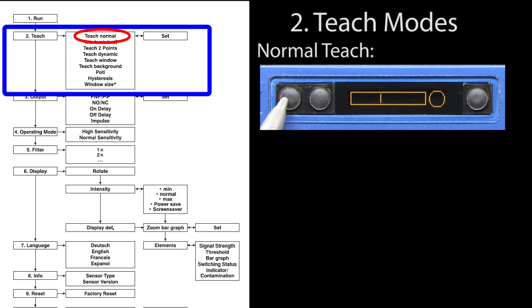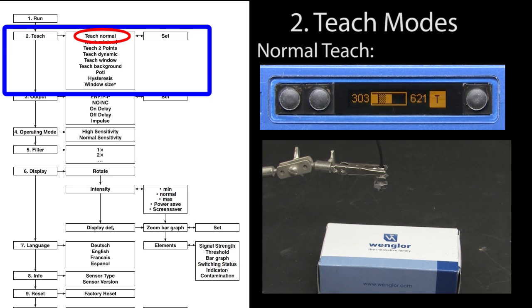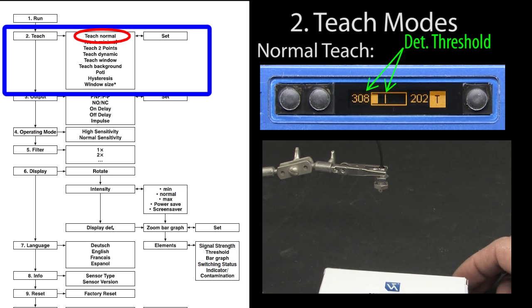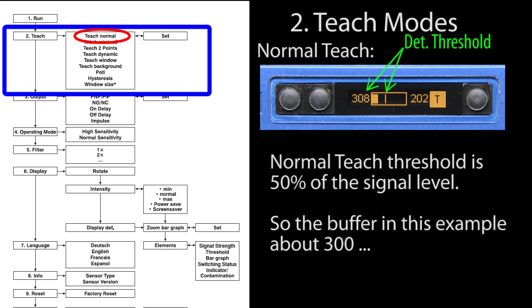For normal teach, press the enter button and down arrow to bring up the teach menu and press enter to drop down into the teach submenu. Normal teach is the first one, so hit enter. Place the object in front of the sensor. Notice that we are at a signal strength of around 600 and hit the T button. The display tells you the teach was successful. This vertical line here on the signal strength bar tells you where the cutoff is. We taught the sensor here at around 600, but any object that crosses in front of this sensor as low as around 300 will be detected. That's important to understand: teach automatically adds in a buffer so you don't need to worry about that.